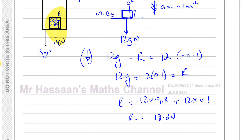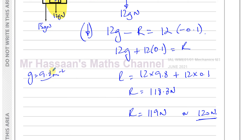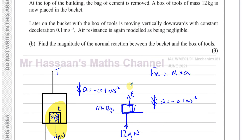We can give the answer to 3 significant figures as 119 newtons, or to 2 significant figures as 120 newtons — both are acceptable. Since we're using g as 9.8 meters per second squared, which is 2 significant figures, answers involving g can be written to 2 or 3 significant figures. For questions not involving g, write to 3 significant figures. It's safer to keep it to 3 significant figures in these types of questions.